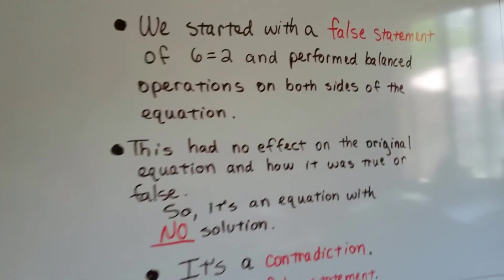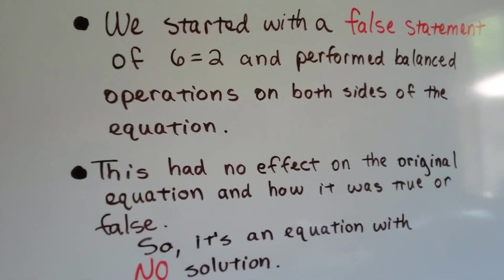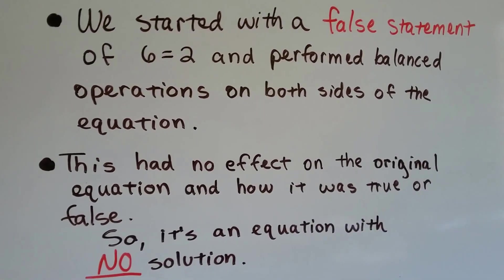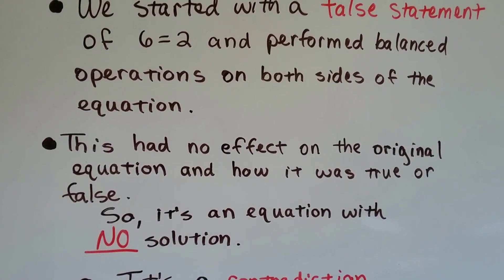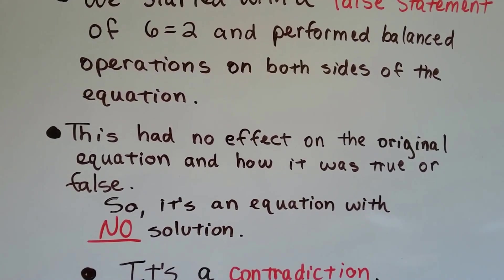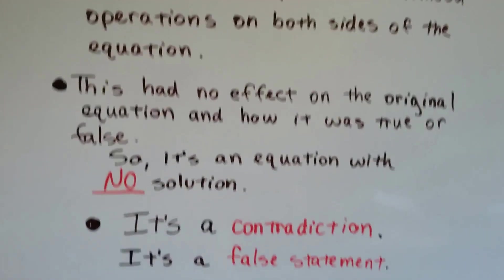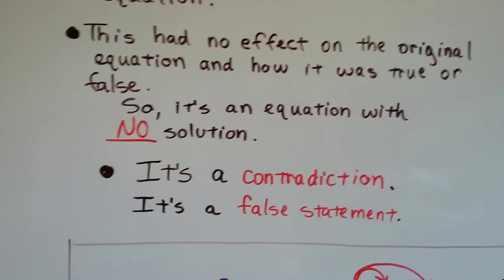We started with a false statement of 6 equals 2 and performed balanced operations on both sides of the equation. It had no effect on the original equation or how it was true or false. So it's an equation with no solution. It's a contradiction. It's a false statement.